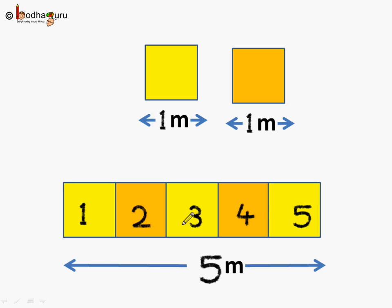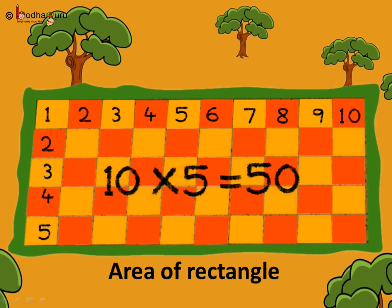Now, if we put 5 tiles in a row, what will be the total length? It will be the sum of 5 tile sides: 1 plus 1 plus 1 plus 1 plus 1, which is equal to 5 meters. So, 5 tiles mean the length is equal to 5 meters. In the case of the rectangular plot, what we did to find the area was 10 multiplied by 5, because there are 5 rows and each row has 10 tiles.